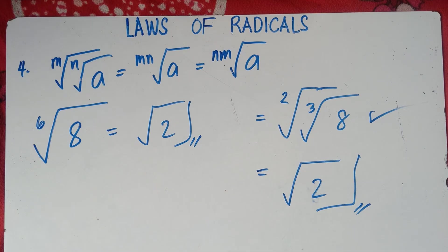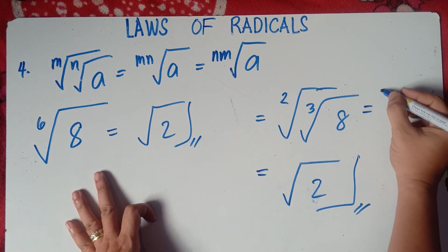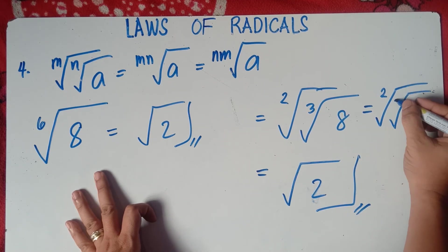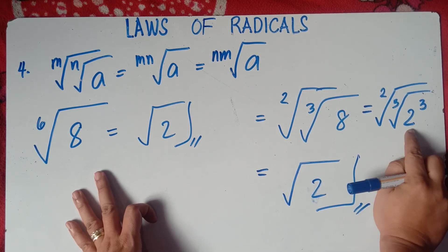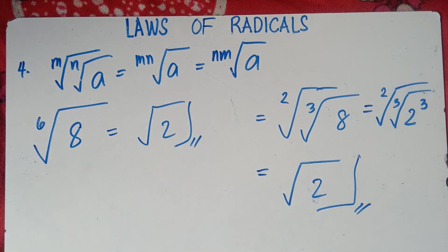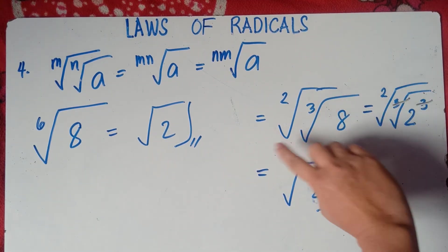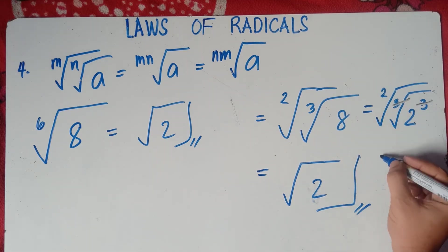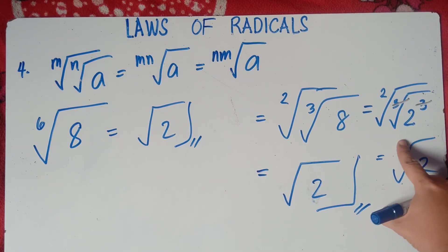The 6th root of 8 equals the square root of 2. Why? We can write this as the square root of the cube root of 2 cubed. Same index and exponent — cancel them out, put 2 outside the radical, and you still have the square root. So the answer is the square root of 2.